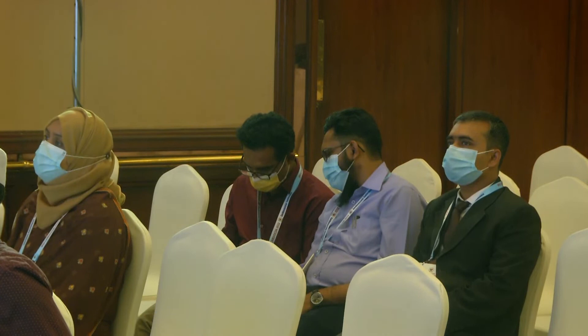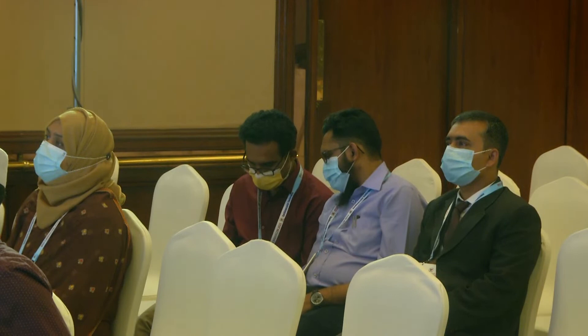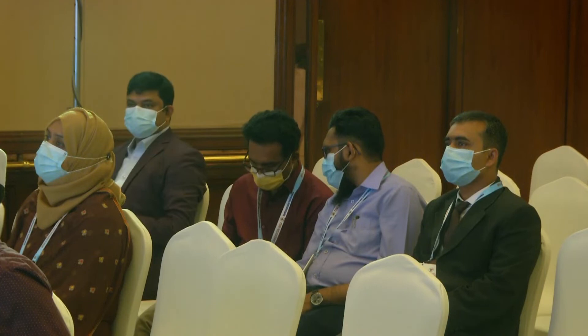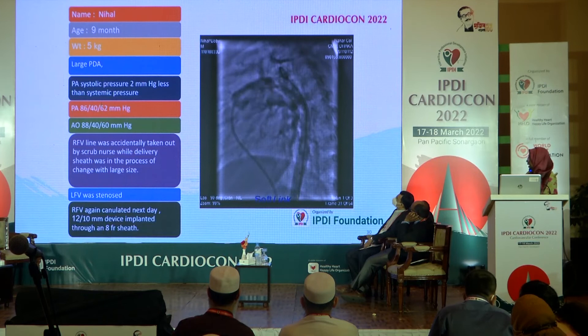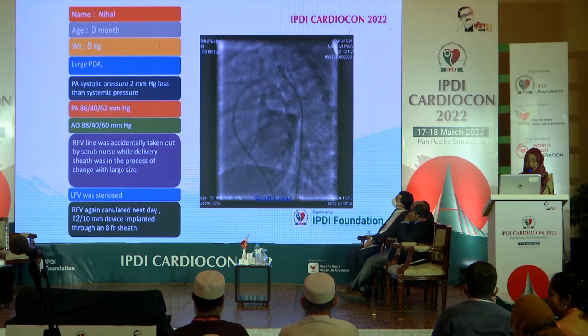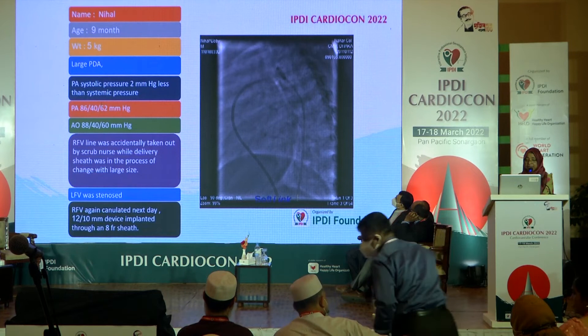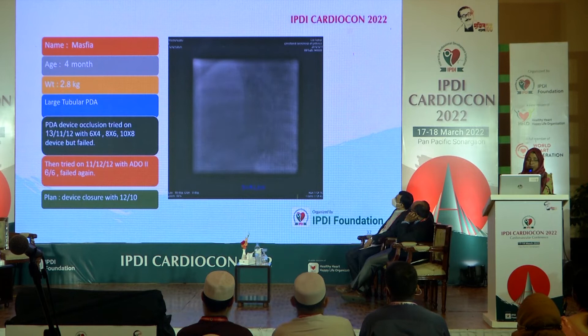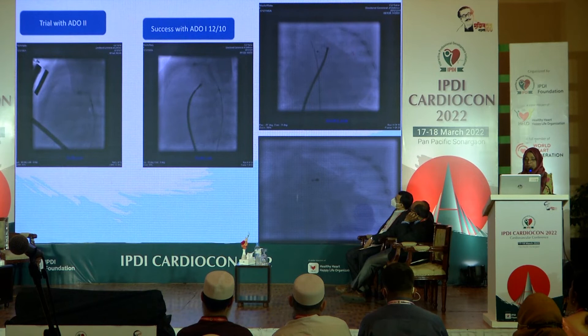Here is baby Jahid — you can see how large the PDA is and the device technique we are using. This patient was very high risk; you can see the PDA size and the aortic and PA pressures. We closed this with the technique I mentioned. Here is Nihal, nine months old — note the low body weight. These patients are very low body weight, and it is very difficult to introduce large devices. The device size here is 12 by 10.